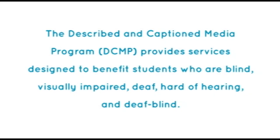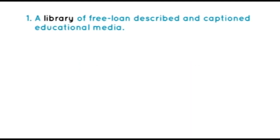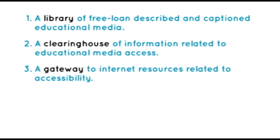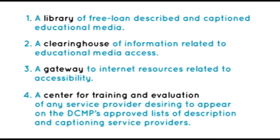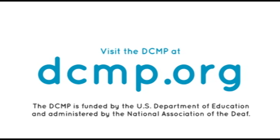The Described and Captioned Media Program provides services designed to benefit students who are blind, visually impaired, deaf, hard of hearing, and deafblind. These services include a library of free loan described and captioned educational media, a clearinghouse of information related to educational media access, a gateway to internet resources related to accessibility, and a center for training and evaluation of any service provider desiring to appear on the DCMP's approved lists of description and captioning service providers. There are no user registration or service fees. Visit the DCMP at DCMP.org. The DCMP is funded by the U.S. Department of Education and administered by the National Association of the Deaf.